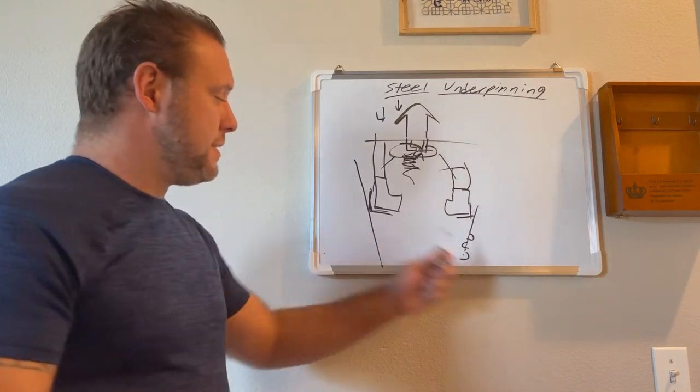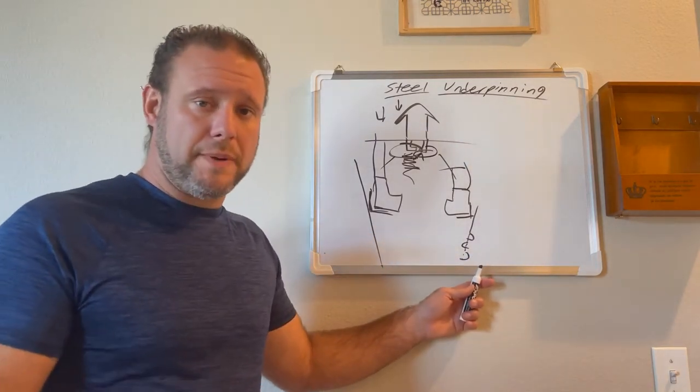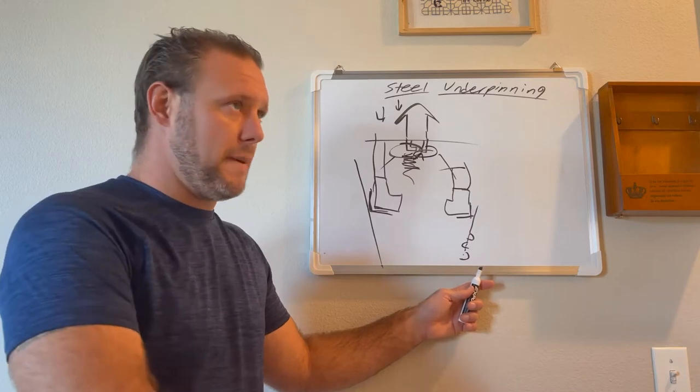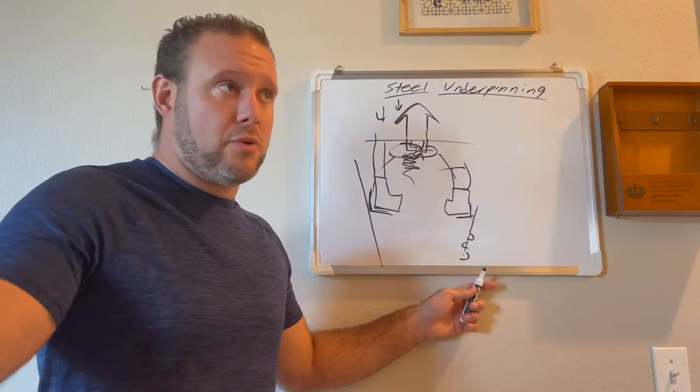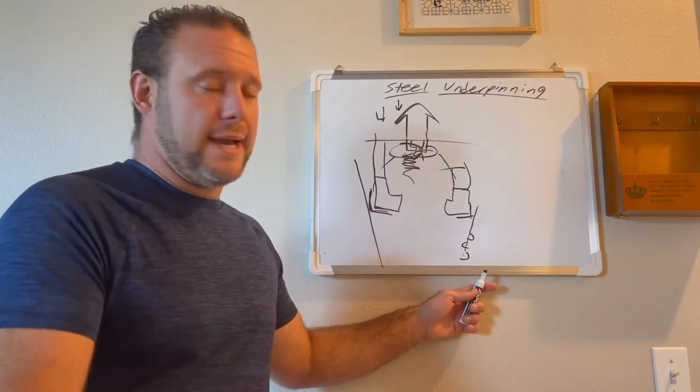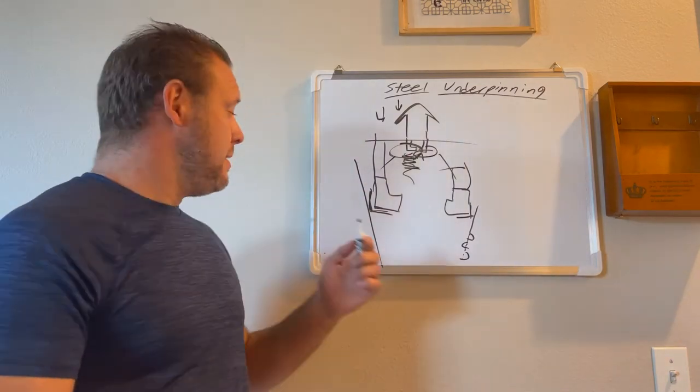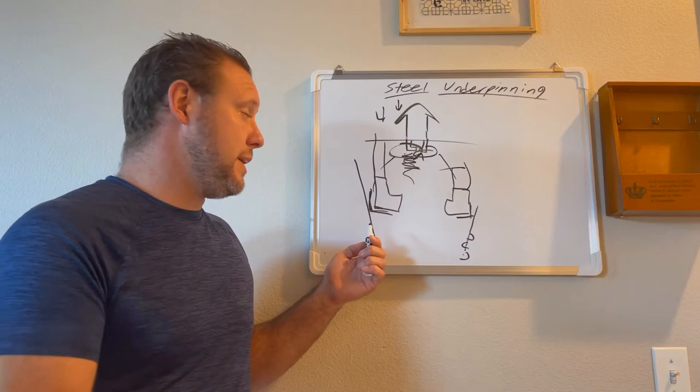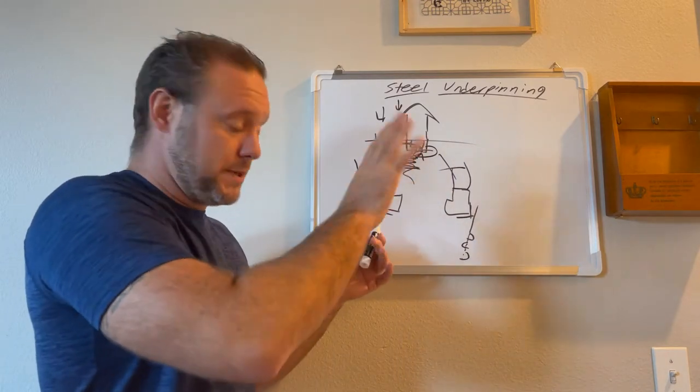Now this is called a series of things. We're going to call them helical piers to keep it consistent. It can be called a billion other things. Helical piles, screw piles, screw piers, helical jack, lots of things. Same thing here. Push piers. We call them push piers.